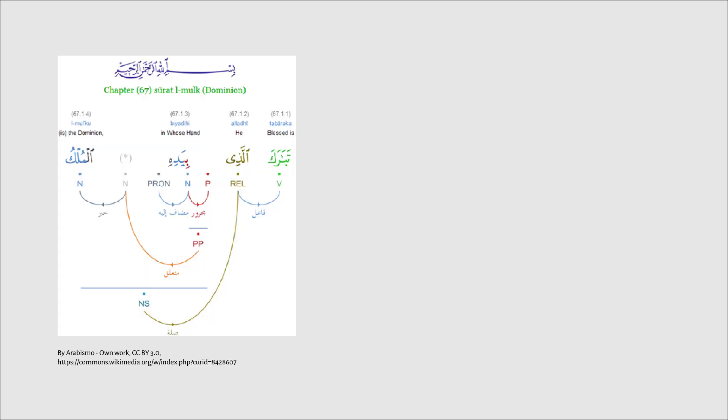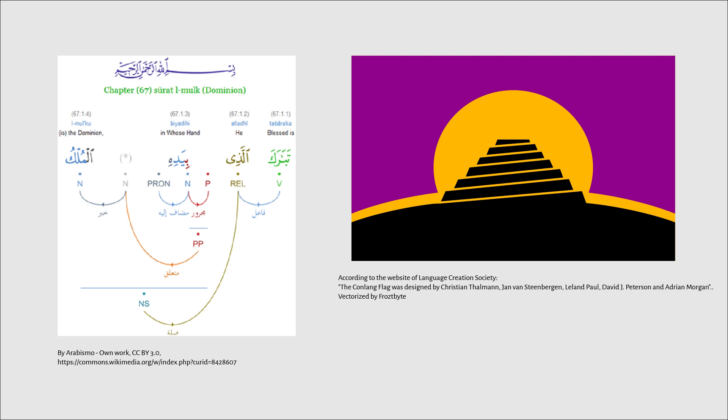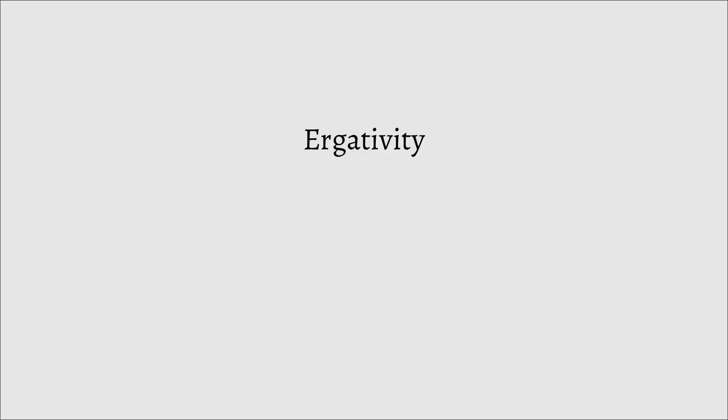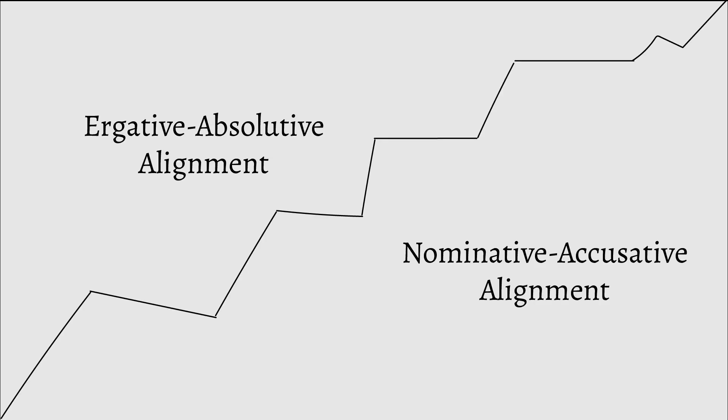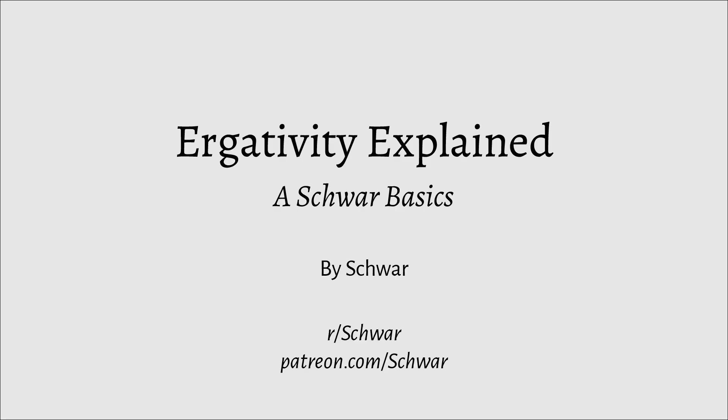Now, if you've been around linguistics or conlangs long enough, you've probably heard the term ergativity, or ergative-absolutive alignment. You also know that it stands in some sort of contrast with nominative-accusative alignment, but are having trouble fully understanding what ergativity actually does. So here's a video about it. To best illustrate how ergativity works, I'm going to create a hypothetical English that makes use of ergativity. Let's call it Erglish.